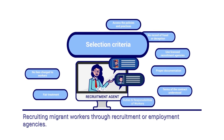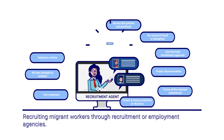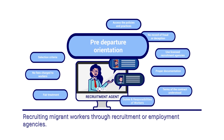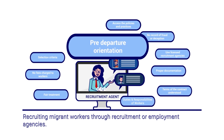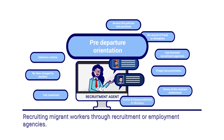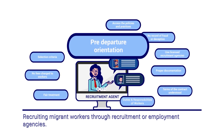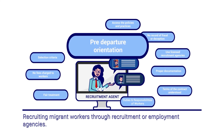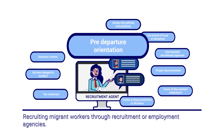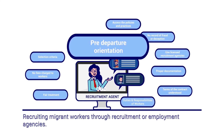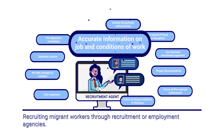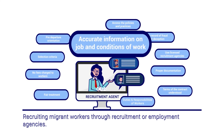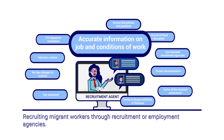Employers should ensure the workers are given appropriate pre-departure orientation, including information about Malaysia, their rights, obligations, and access to remedy. Employers should also provide accurate information about the nature of the job and conditions of work.